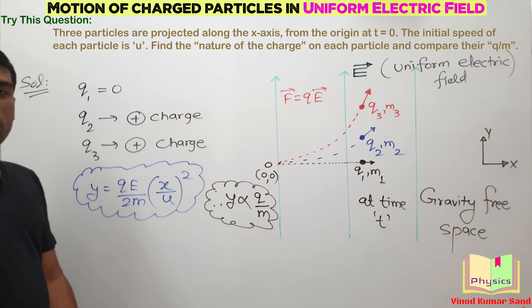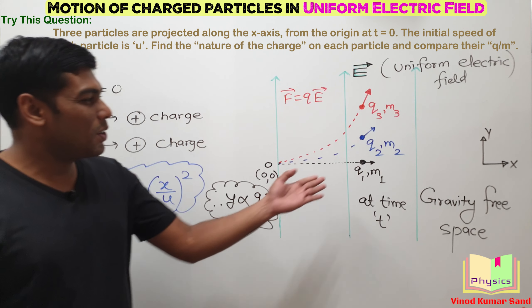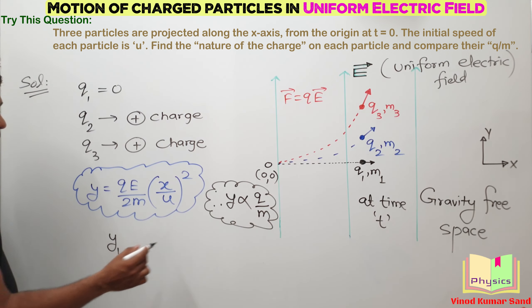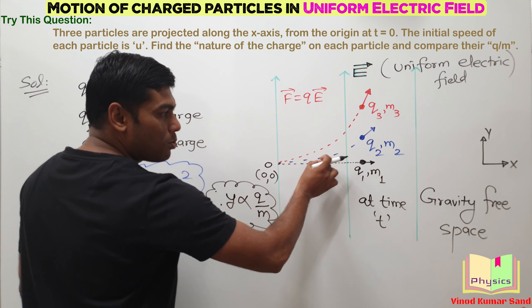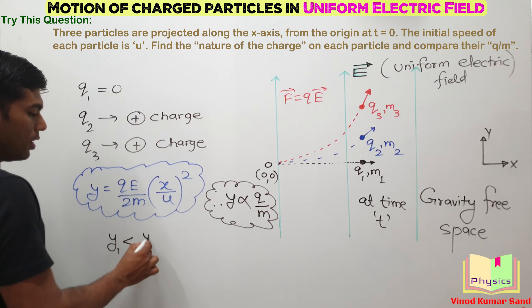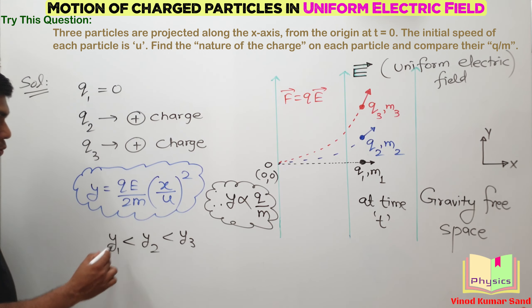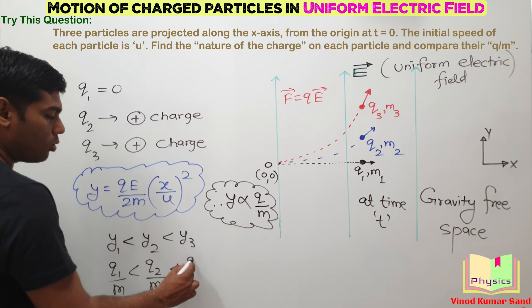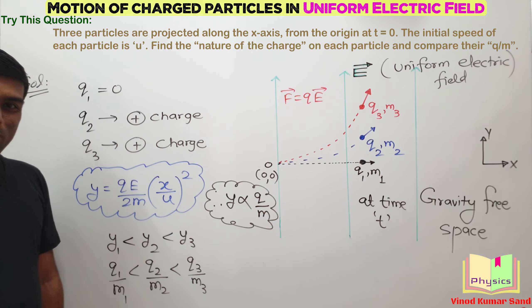Greater the deflection, greater is the charge to mass ratio. We can directly see Y1 is least. Actually, Y1 is 0. It is moving along the x-axis. Then comes Y2 and then comes Y3. So we can write that Q1 by M1 is least. This data is actually 0. Then comes Q2 by M2, and then comes Q3 by M3. I hope you got the same answer.